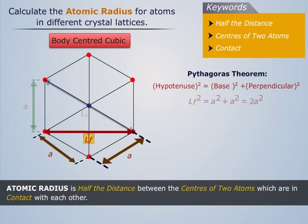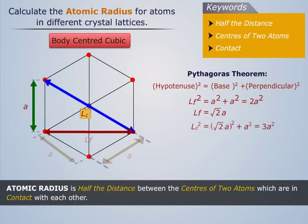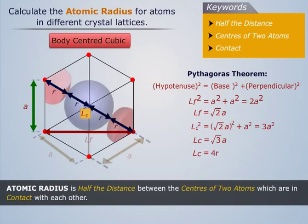Applying Pythagoras theorem for the face diagonal, and then applying Pythagoras theorem for the cube diagonal LC, we can solve for LC. Since the cube diagonal LC is equal to 4 atomic radii, the atomic radius for a body centered cubic lattice is √3A/4.